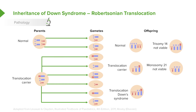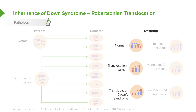Alternatively, they could create a translocation such that this patient has Down syndrome — they have essentially three copies of the 21st chromosome, one of which is adhered to their 14th chromosome. Or they could create monosome 14, which is also not viable. So essentially, the odds are that this couple can either have a normal child, a child who is at risk for creating children in the next generation in a similar way, or a child with Down syndrome.